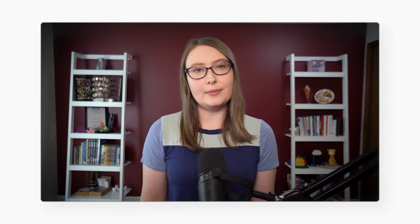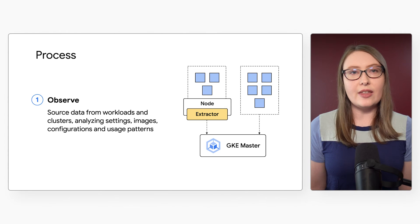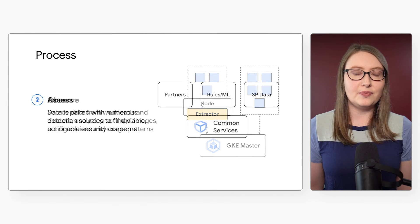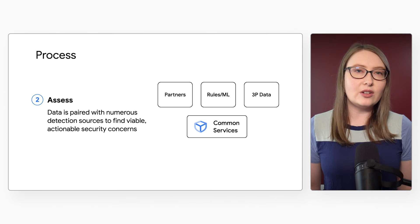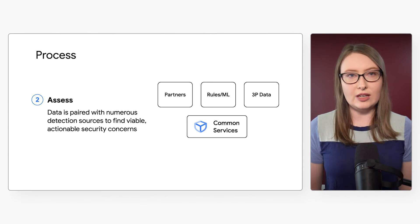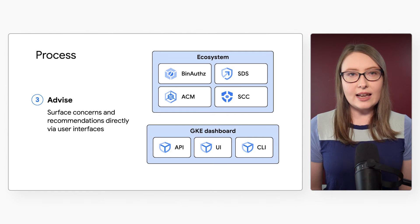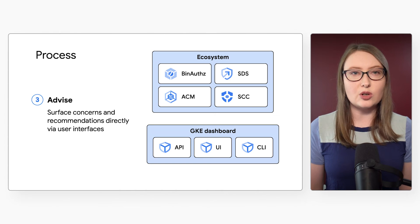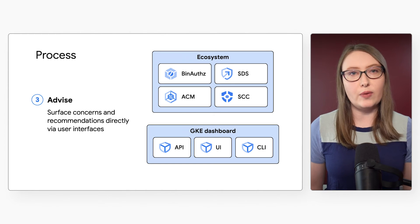How GKE security posture management works can be broken down into three steps. First, observations are gathered from source data from workloads and clusters — analyzed settings, images, configurations, and usage patterns. Second, the data from these observed factors is assessed using numerous detection sources to find security concerns. Third, once assessed, GKE surfaces concerns via tools like the security posture dashboard, alongside actionable recommendations.